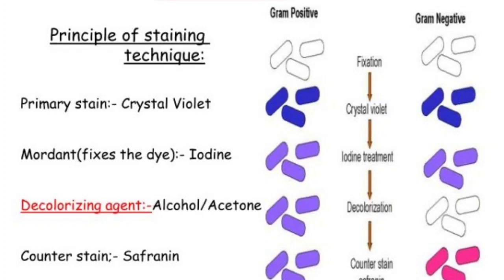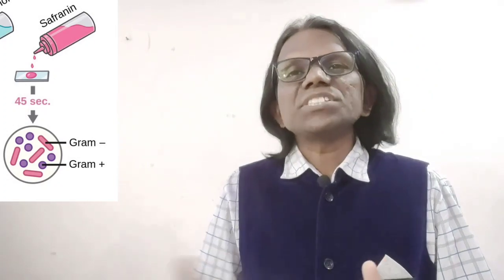Flood the smear with the decolorizing agent for 10 to 20 seconds, then wash again with water. Finally, apply the counter stain safranin. After flooding with the decolorizing agent or 95% alcohol, if the cells still retain a crystal violet purple or blue color, the cells are gram-positive bacteria. If the cells lose the primary stain and instead retain the counter stain safranin, they will appear pink or red in color.